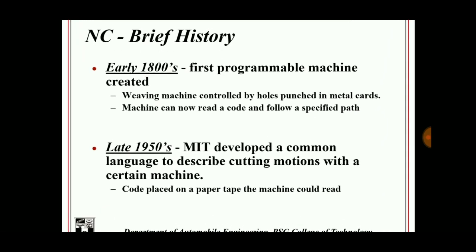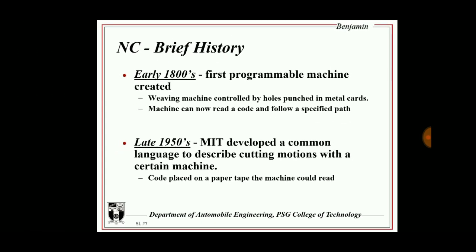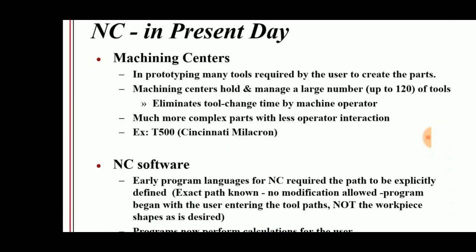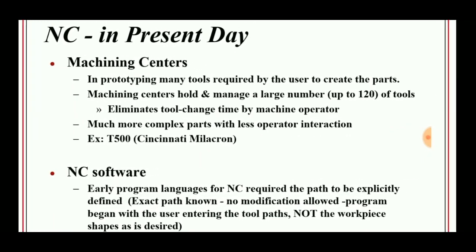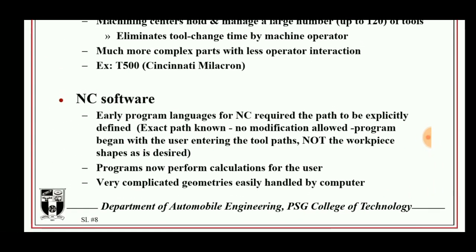Some history: programmable machines were created in the 1800s; code-input machines emerged in the 1950s; machining centers using multiple tools followed. Then NC software emerged with G-codes (geometric codes) and M-codes (machine codes), which are fed into NC software so the machine can take them as input and produce the machining output.